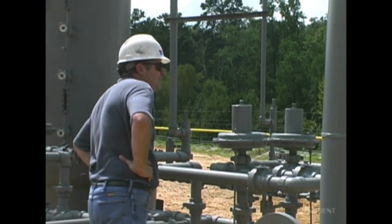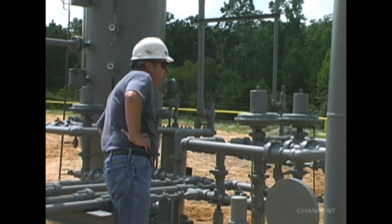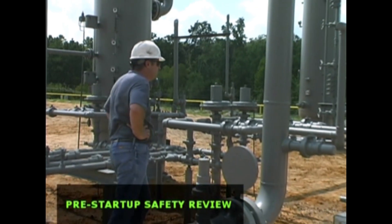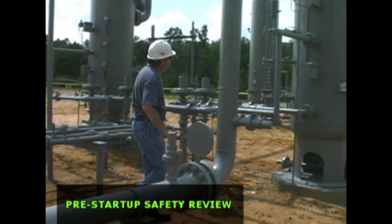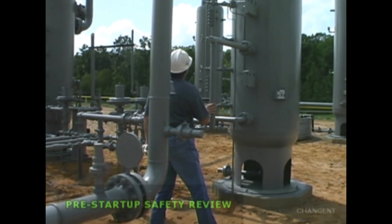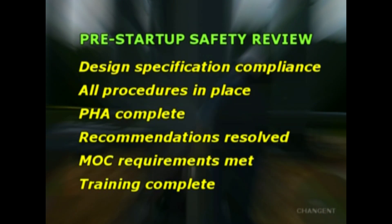A safety review should take place before any highly hazardous chemical is introduced into a process. PSM requires the employer to perform a pre-startup safety review for new facilities and for modified facilities when the modification is significant enough to require a change in the process safety information. The pre-startup safety review must confirm that: construction and equipment are in accordance with design specifications; safety, operating, maintenance, and emergency procedures are adequate and in place; a PHA has been performed and recommendations resolved before startup; modified facilities meet management of change requirements; and training has been completed for each employee involved in operating the process.